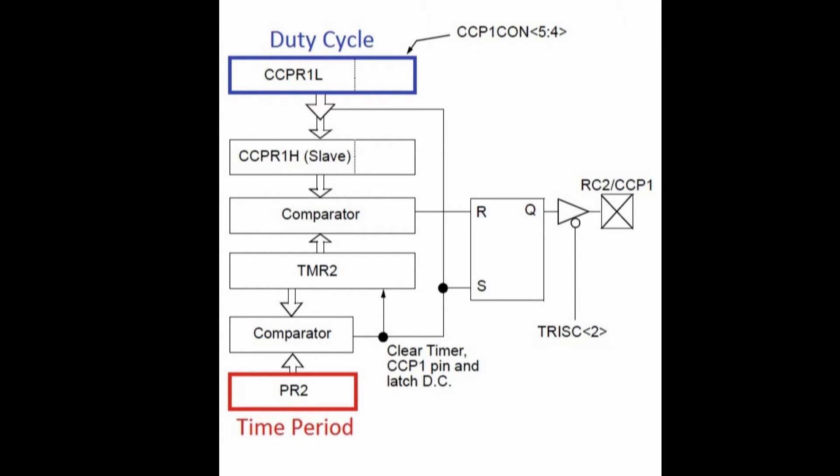So TMR2 register is working as free running counter. CCPR1H register will latch the value of duty cycle during start of every cycle. This will avoid possibility of glitches in the output due to sudden change in duty cycle value.